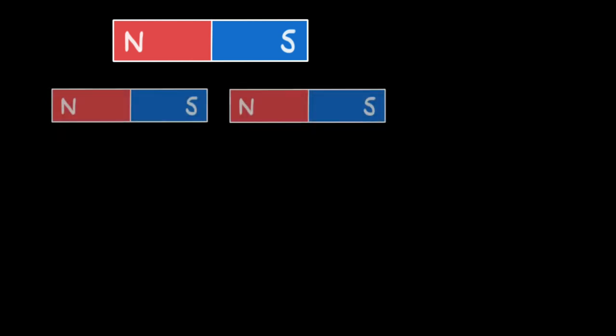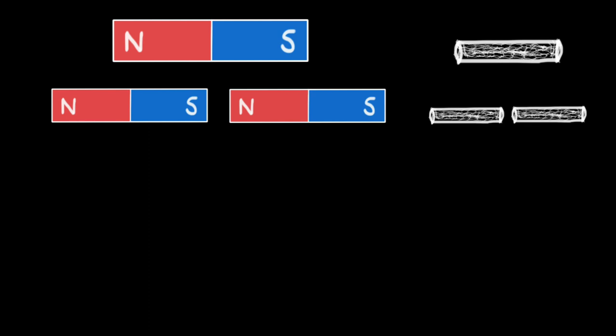If we take a bar magnet and break it into two pieces, instead of getting a separate north pole and a south pole, we get two smaller bar magnets. Just like if you had a piece of chalk and you break it into two, you get two smaller pieces of chalk.